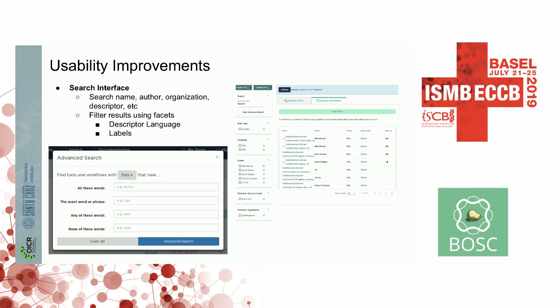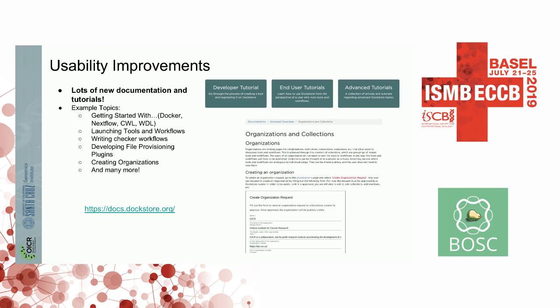For the search interface, we've increased facet searching — searching by labels or by descriptor languages — so people can find things in a more specific manner. Other usability improvements include a lot of new documentation for tutorials on how to create workflows, how to create organizations, and more.